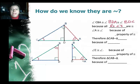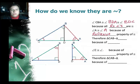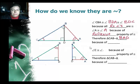Angle A needs to be congruent to angle A because of the reflexive property. Angle CAB should then be congruent to angle BAD — going to angle A and then to the right angle. That is because of angle-angle similarity.